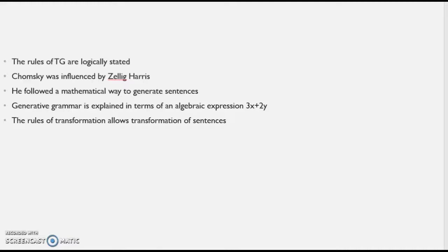Chomsky was highly interested in generative systems — anything that generates or brings into being. He applied this principle of generation to language in order to generate sentences, and it is this idea that resulted in the formulation of generative grammar. Even in mathematics we have generative principles and formulae.